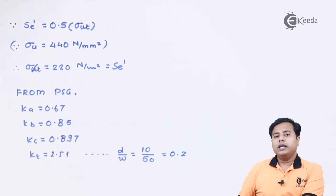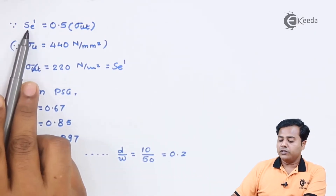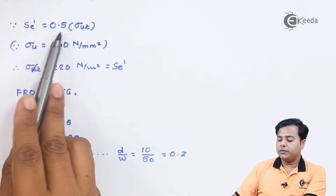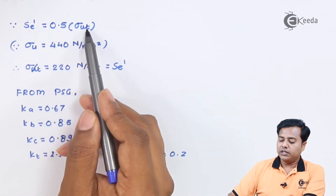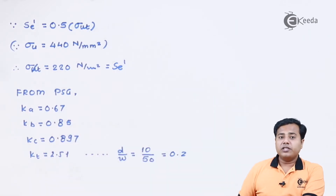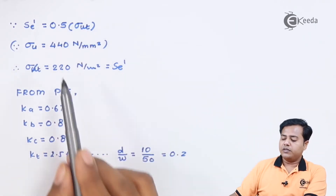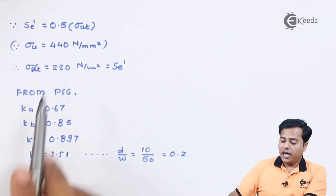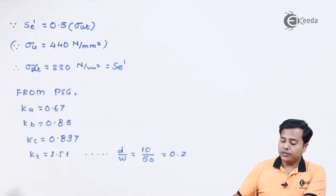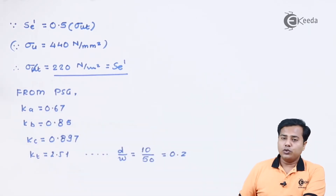Let us begin with the theoretical endurance limit. The theoretical endurance limit is given by 0.5 times the ultimate tensile strength. We know that the ultimate strength is 440 N/mm², so the theoretical value of the endurance limit becomes 220 N/mm².